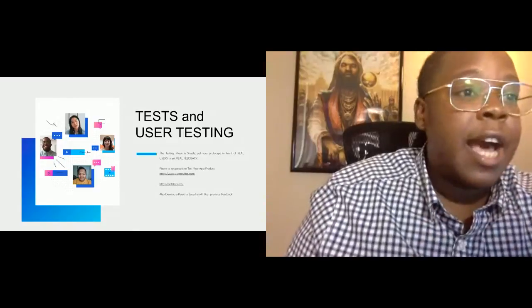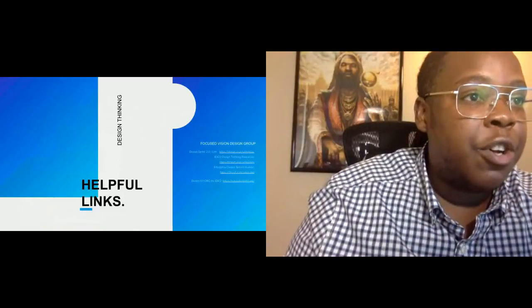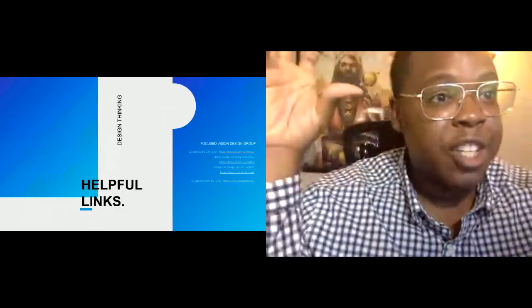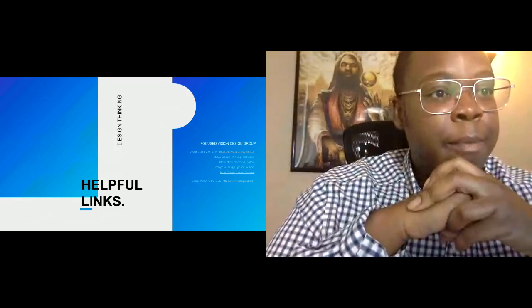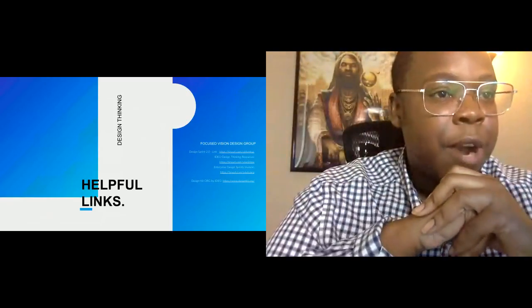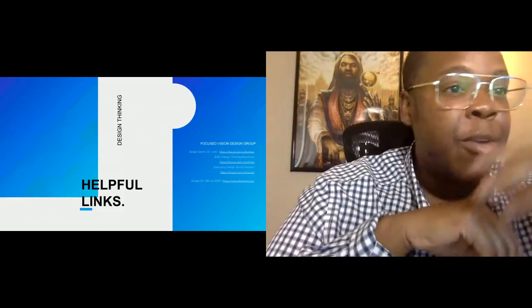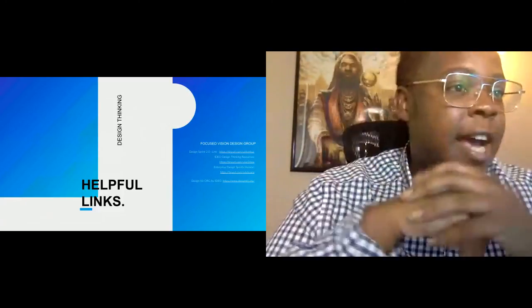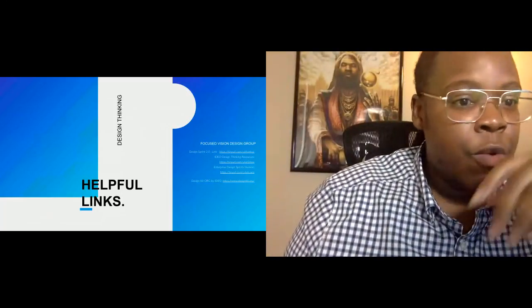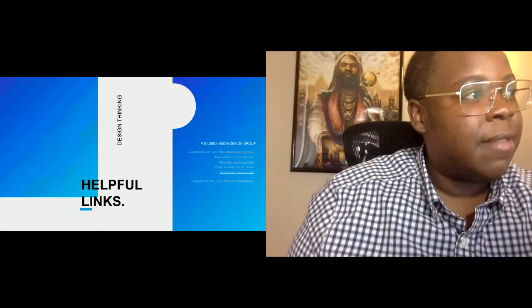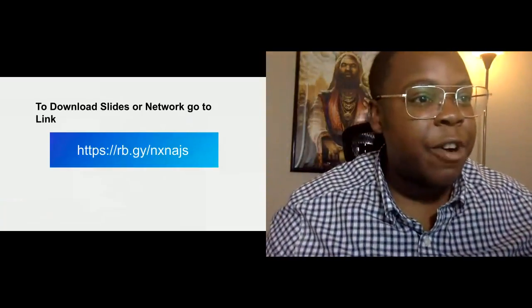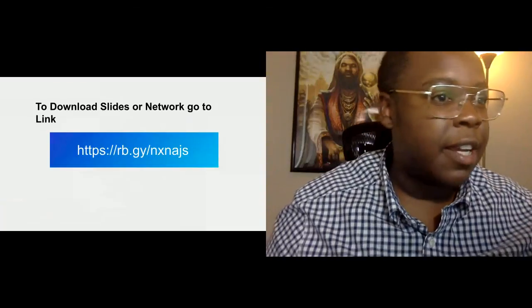So some of the places that you can go to test your app will be usertesting.com and beta lists. Also, again, when you're doing testing. You went through all these phases, so you should have a pretty strong persona who you want to test. So have that persona ready when you're testing your application or product. And here we kind of have some more helpful links. So if you want to really go through a workshop and workforces through books, there's a design sprint 2.0 by IDEO. And they really did a lot when it comes to, like, marketing this design thinking process. We have enterprise design sprints. And there's another design kit by IDEO as well. And again, here's the thing to download the slides.